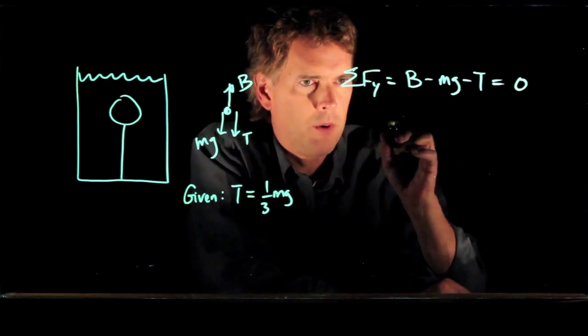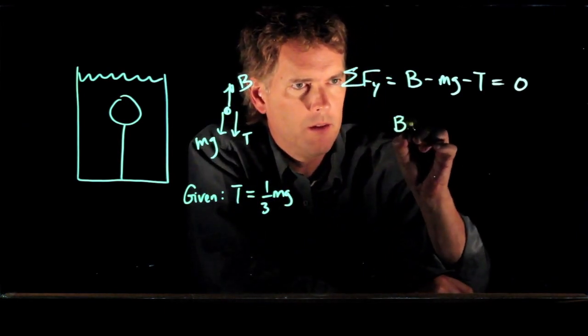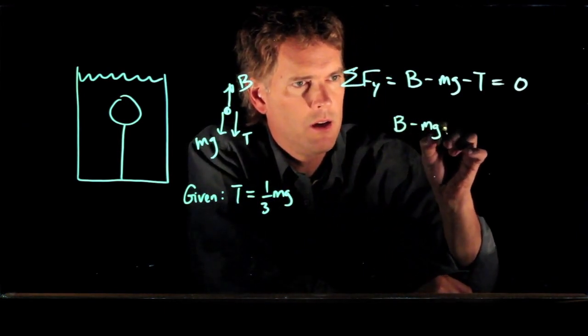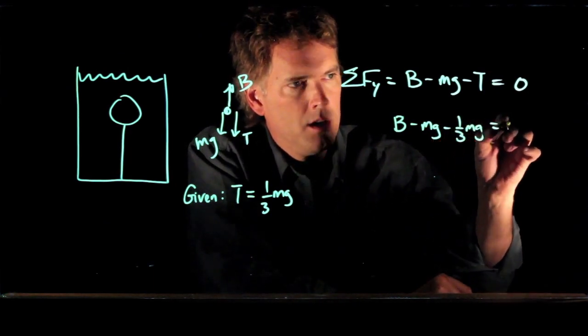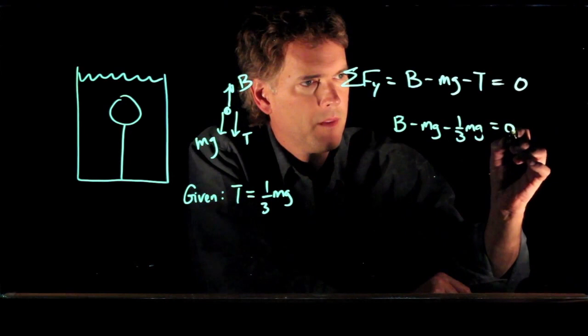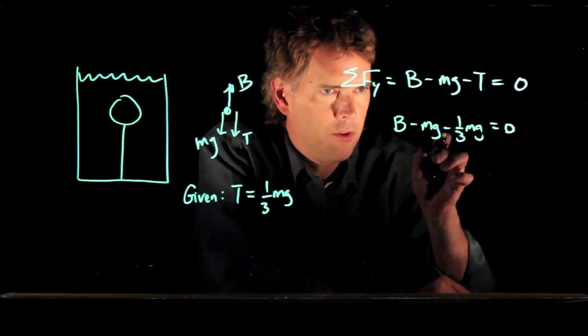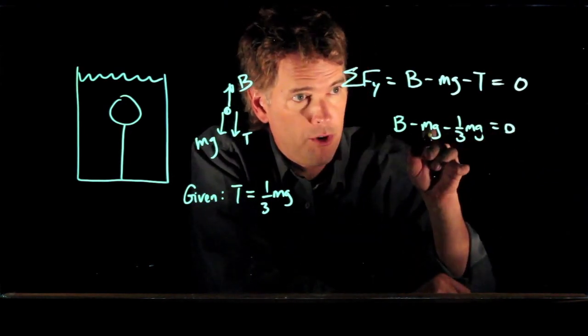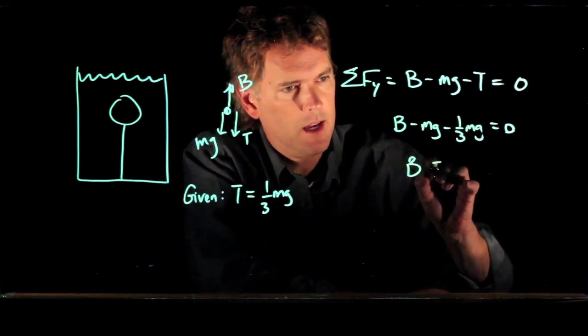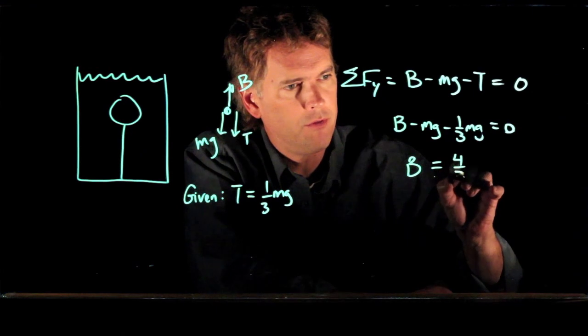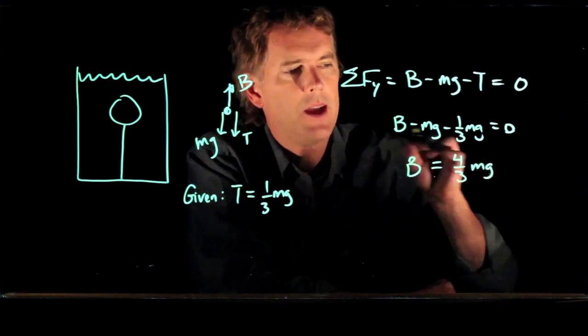Let's plug this in now and see what we have. We have B minus mg minus one-third mg equals zero. I can lump those two terms together and I get four-thirds. It's got a negative in front of it, so I can add it to the other side. And I get B is equal to four-thirds mg.